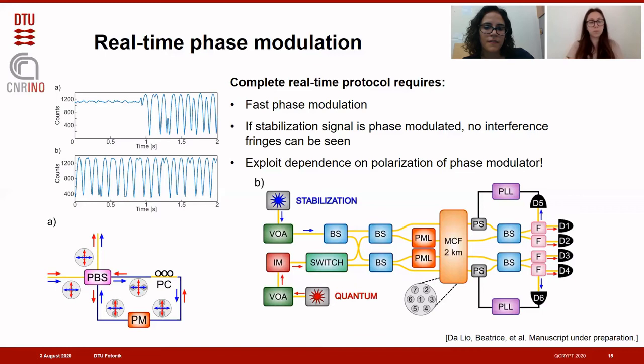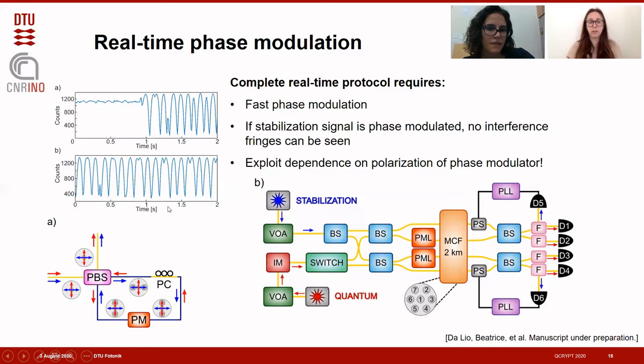We designed a loop that keeps the two signals orthogonally polarized, so that the quantum signal has the correct polarization to be phase-modulated, while the stabilization signal has the orthogonal polarization and is therefore not modulated. In this way, the interference fringes are present even when the phase modulator is on and the stabilization signal is passing through it.